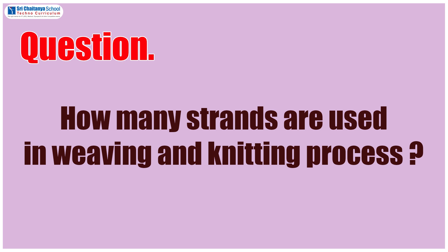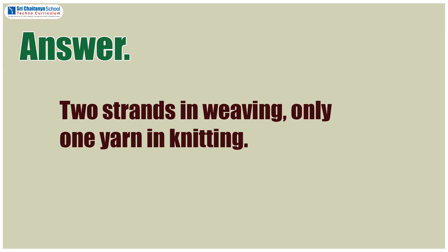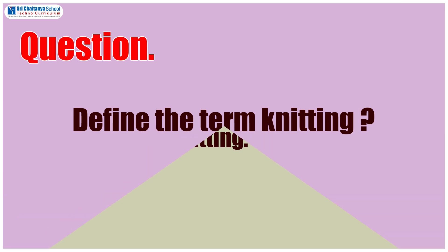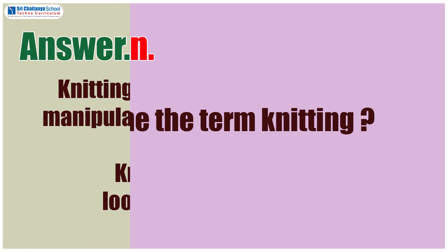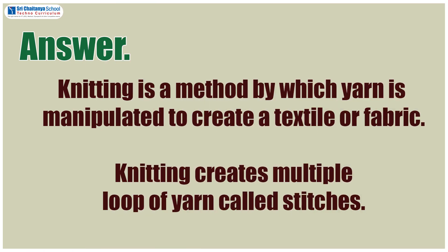Anyone would like to answer? The answer is two strands in weaving and only one yarn in knitting. The second question is: define the term knitting. Knitting is a method by which yarn is manipulated to create a textile or fabric. Knitting creates multiple loops of yarn called stitches.